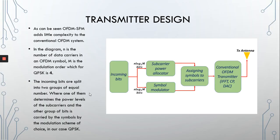Coming to the transmitter design, if you look at the transmitter diagram of OFDM-SPM, you'll notice it's not actually much different from that of conventional OFDM, where you would just have one data stream of incoming bits with one block for symbol modulation — which would simply be QPSK, as in our case.